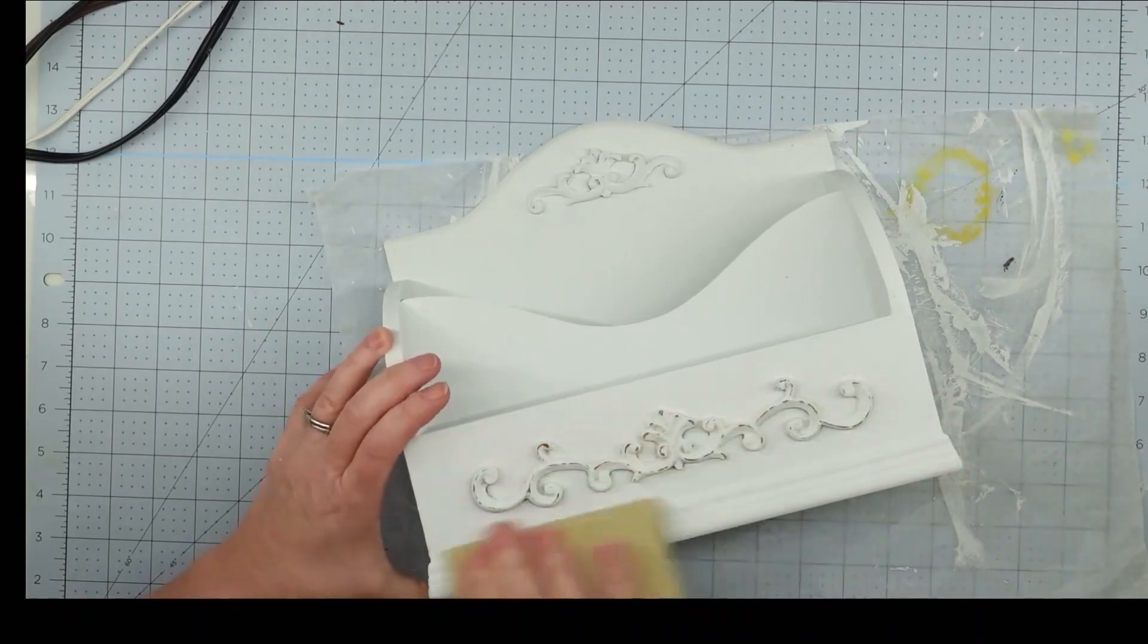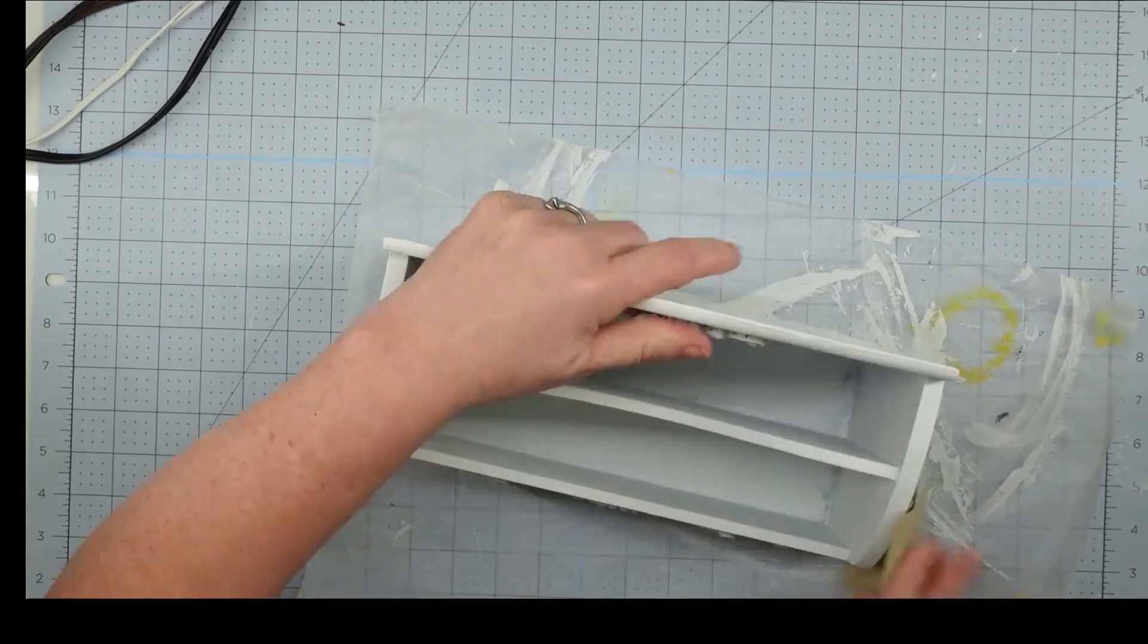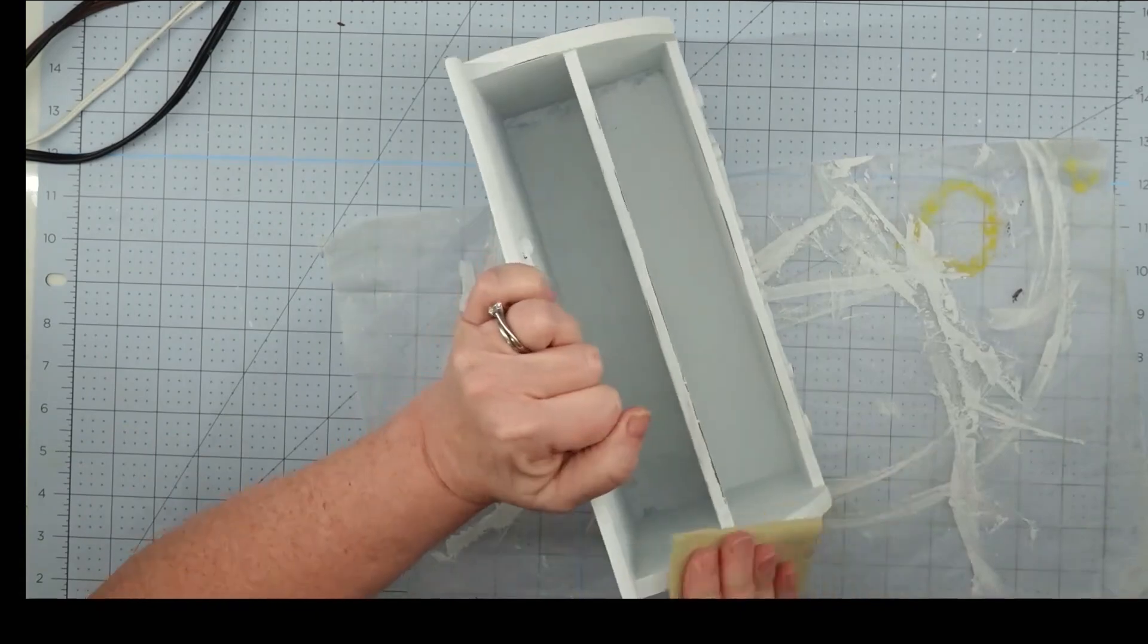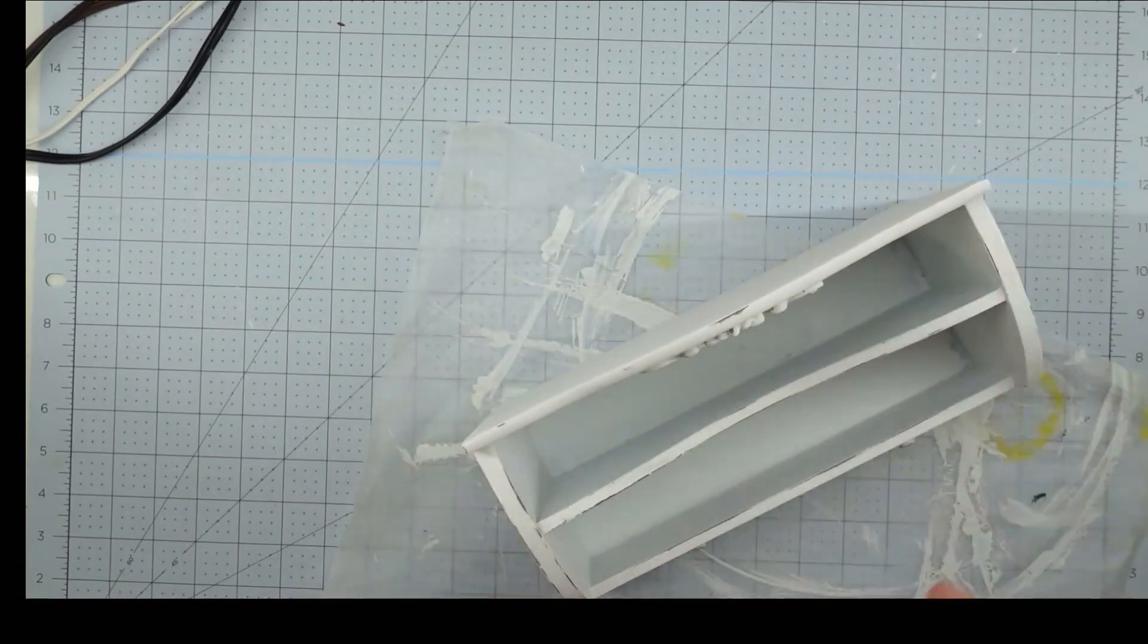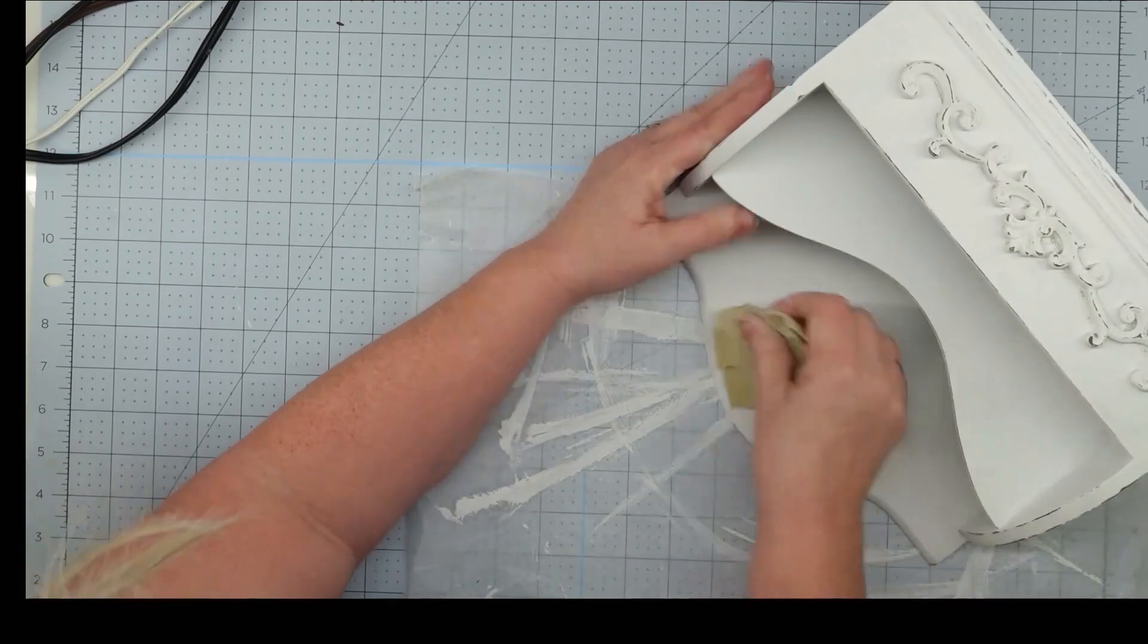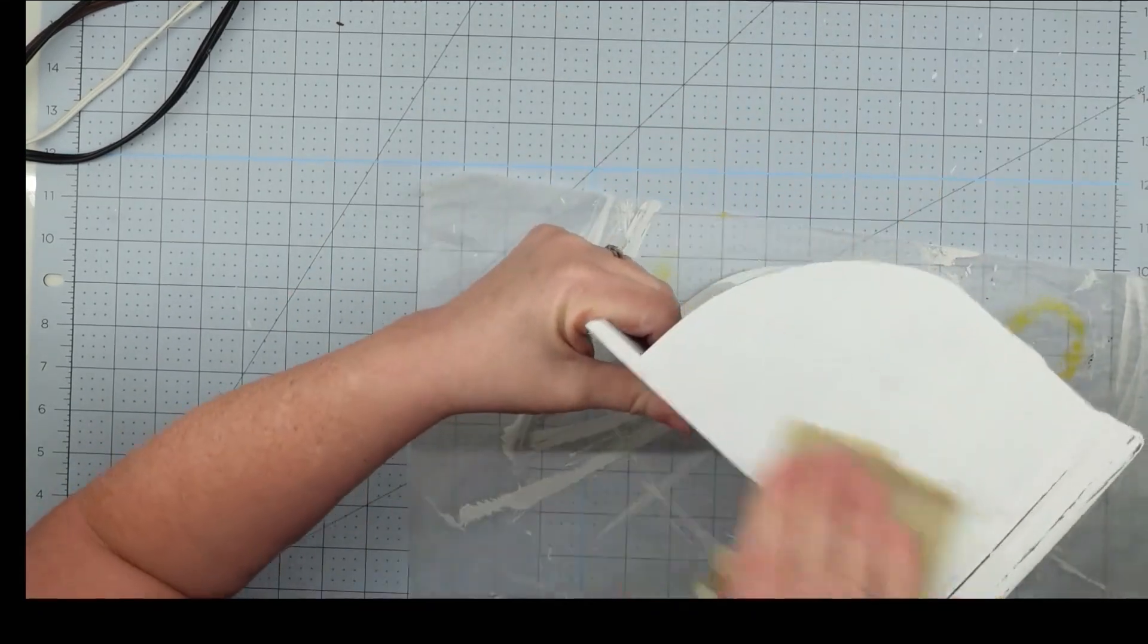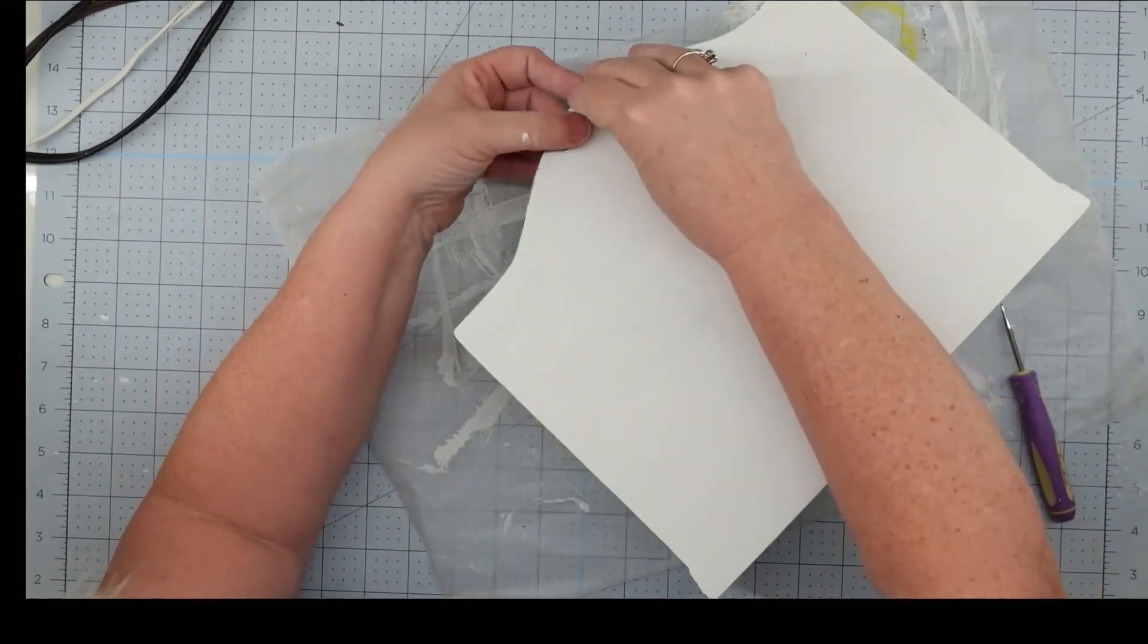Once our paint is completely dry, I grabbed my fine grit sandpaper and I'm just going to go over this and do some distressing. I went over all of that detail work to really make it pop out, and then I also did the edges and all the corners of this, those places that naturally get distressed over time. You can do this as heavy or as light as you like.